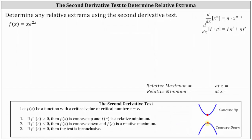If f double prime of c equals zero, then the test is inconclusive, and we would have to use the first derivative test or analyze the graph. Let's begin by determining the critical numbers of the given function, which means we need to determine where the first derivative is equal to zero or undefined. To find the first derivative, we'll need to apply the product rule as well as the chain rule.